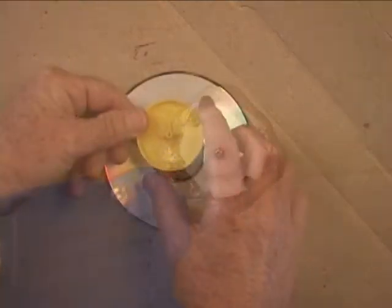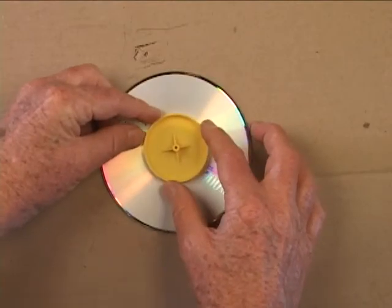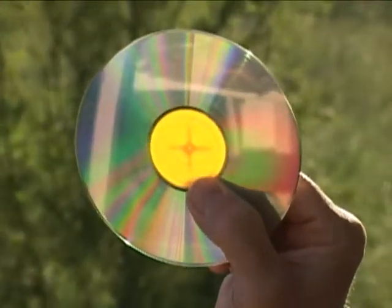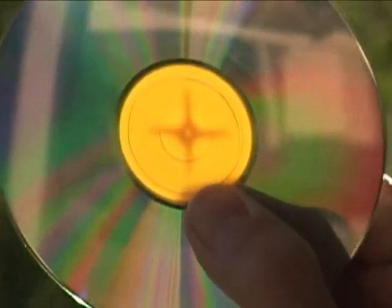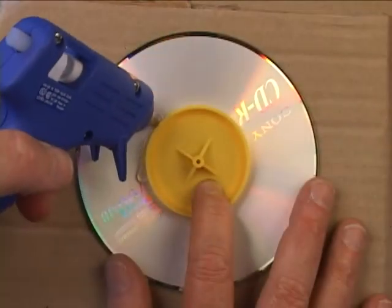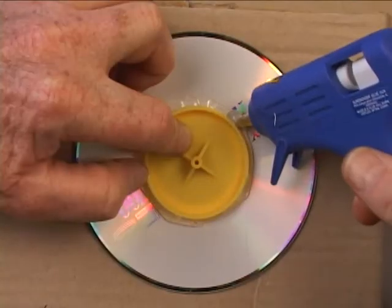Next, align the yellow wheel with the center of the CD. It helps to hold them up to the light and center the cross-shaped shadow on the back of the wheel with the hole in the CD. Use hot glue to attach the wheel to the CD.